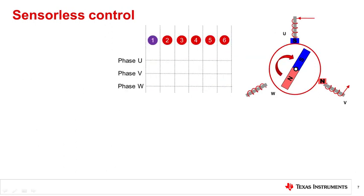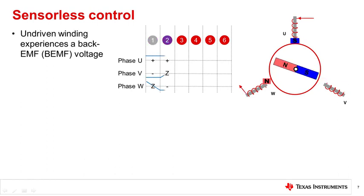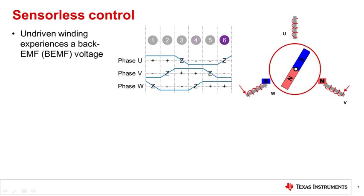Now let's talk about sensorless control. Sensorless control can potentially remove the need for external sensors by measuring the back EMF zero crossings or calculating the back EMF generated during commutation.